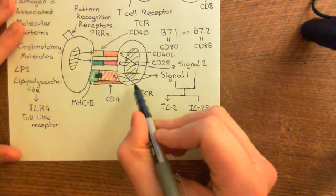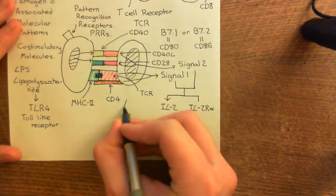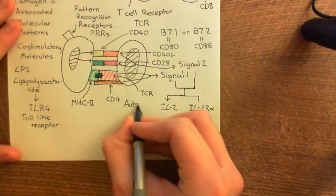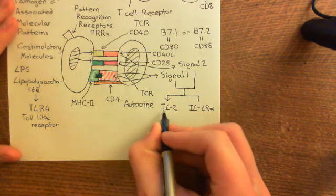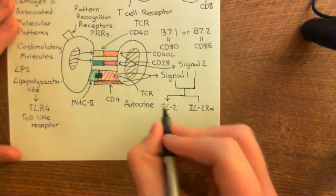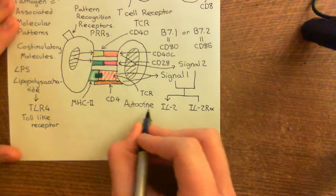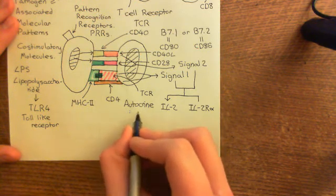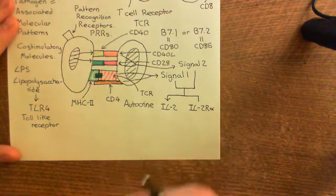The T cell secretes interleukin-2, which stimulates receptors on its own cell membrane — this is known as autocrine signaling. When you release a molecule that stimulates a receptor on your own cell membrane, that is autocrine. Auto means self; crine refers to signaling, so it is self-signaling.